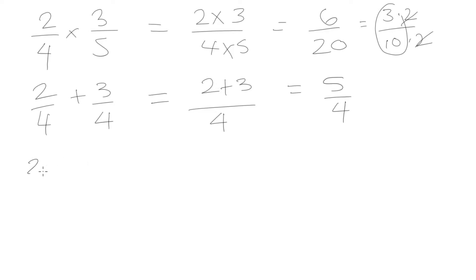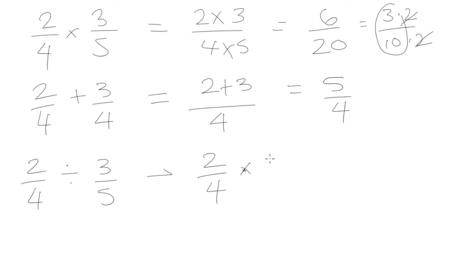Now what if you had 2 quarters divided by 3 fifths? When we are dividing a fraction, that is going to be the same thing as multiplying by the reciprocal. So another way of writing down this expression is 2 quarters multiplied by 5 over 3, because dividing by 3 over 5 is the same thing as multiplying by the reciprocal, which is 5 over 3. Now we're just going to multiply 2 and 5, which is 10, and multiply 4 and 3, which is 12.